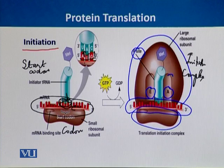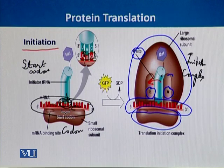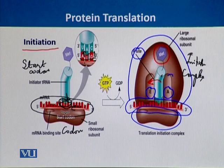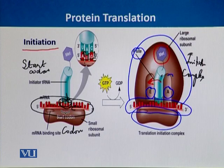After binding, the transfer RNA moves to the exit site. Transfer RNA carries one amino acid on its opposite side, which is methionine, because methionine matches the start codon AUG. So the first amino acid is always methionine.